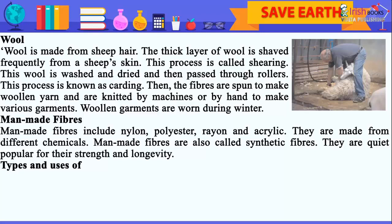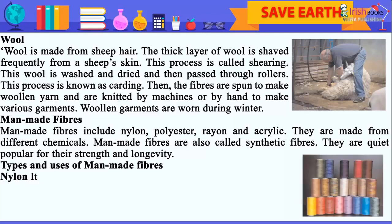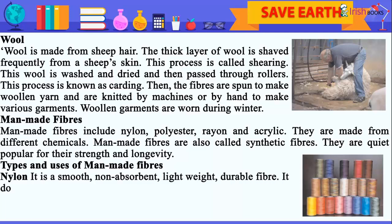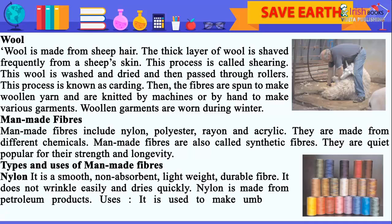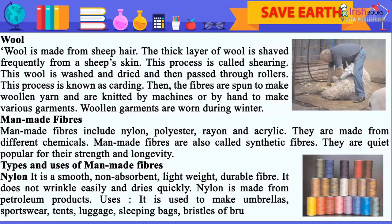Types and uses of man-made fibers. Nylon: it is a smooth, non-absorbent, lightweight, durable fiber. It does not wrinkle easily and dries quickly. Nylon is made from petroleum products. Uses: it is used to make umbrellas, sportswear, tents, luggage, sleeping bags, bristles of brushes, etc.